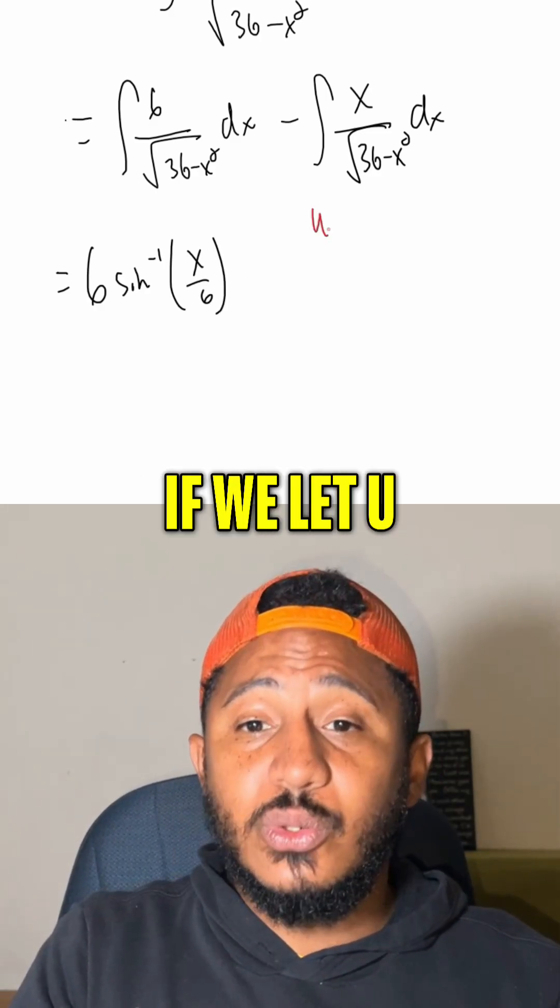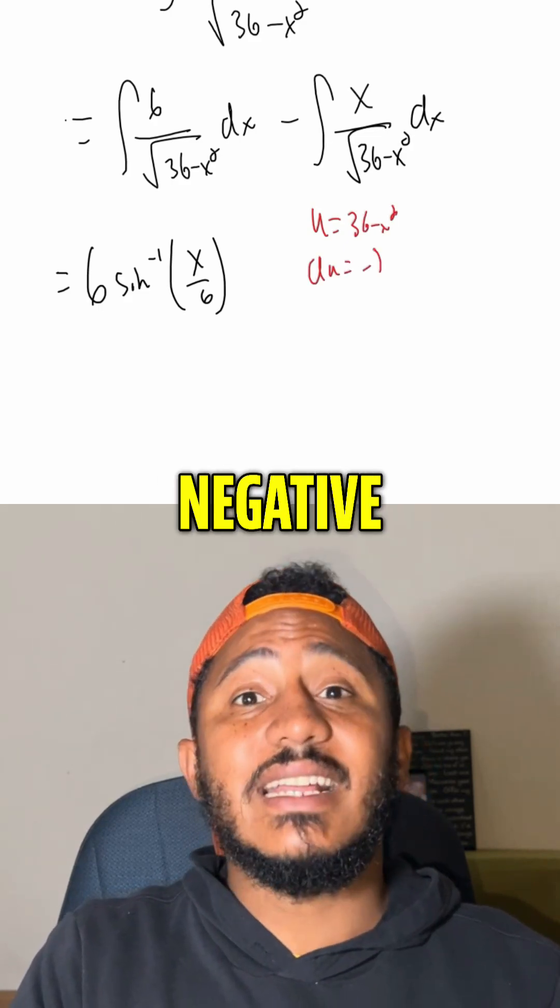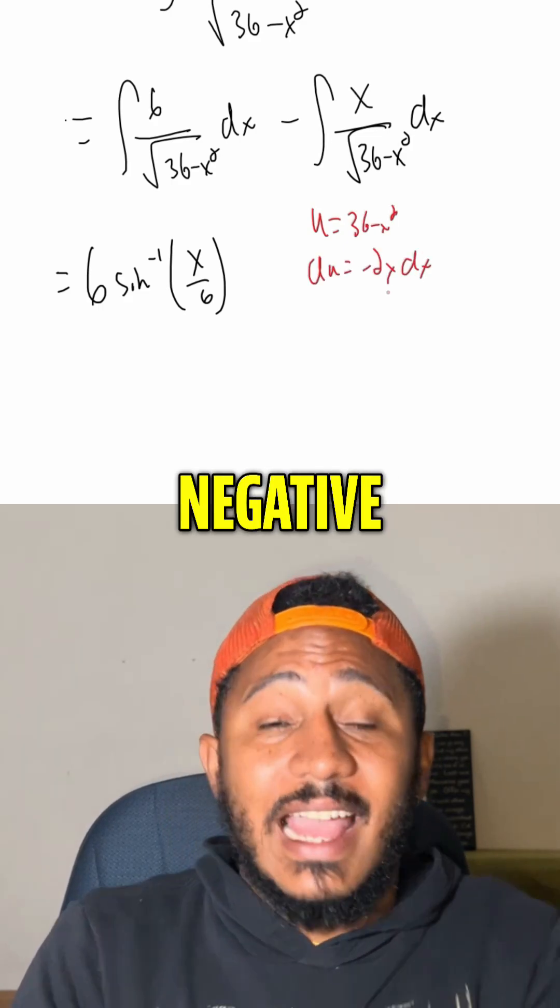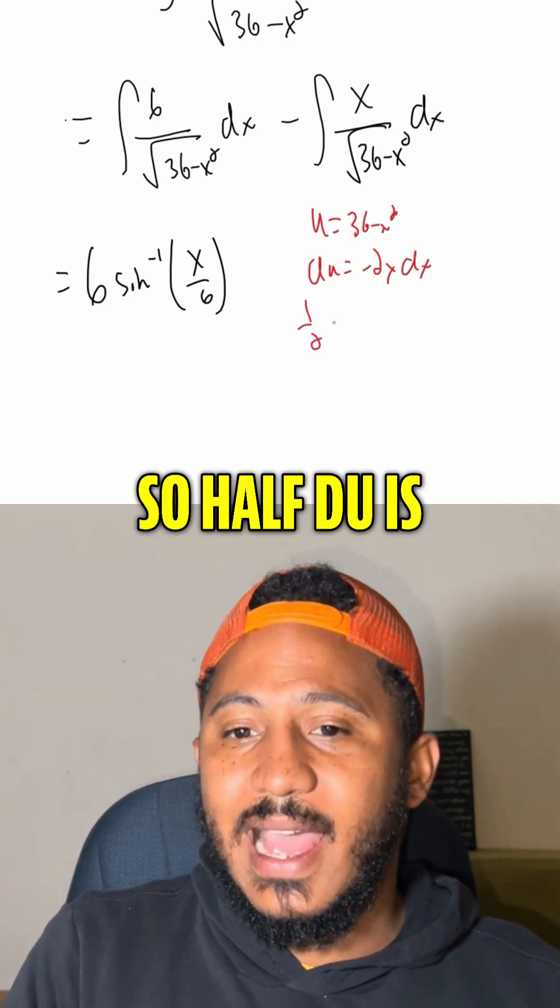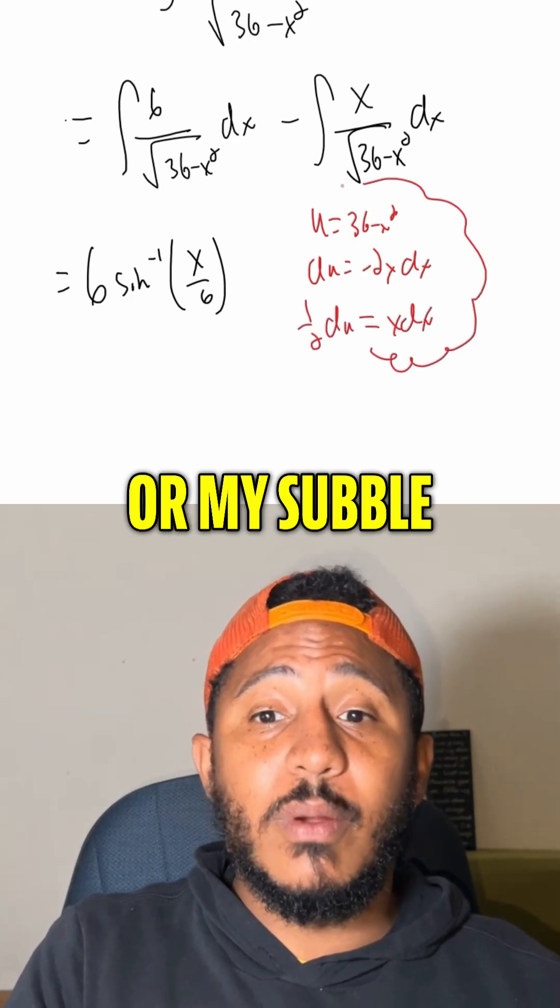Whereas here, this one's a quick use of, if we let u equal 36 minus x squared, then du is negative 2x dx. I have the negative x dx. I just need 2. So half du is x dx. So there's my substitution.